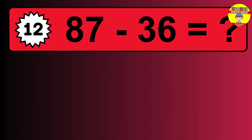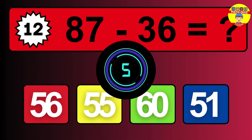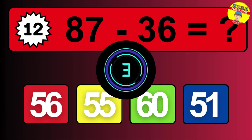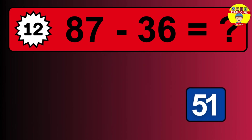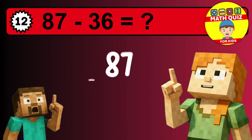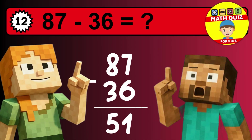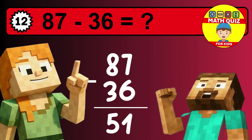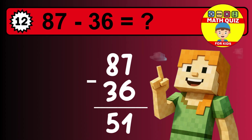What is 87 minus 36? Time to think. Let's solve this step by step. We start with the units: 7 minus 6 is 1. Then we go to the tens: 8 minus 3 is 5. The final answer is 51.